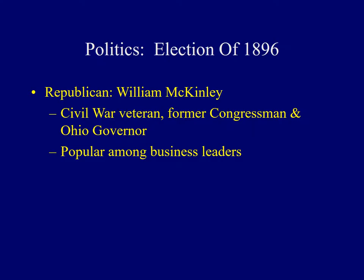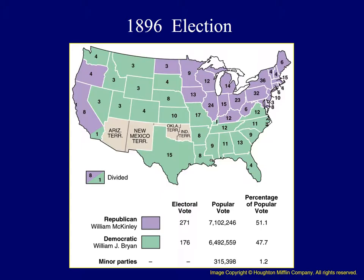The Republican nominee was William McKinley — a veteran of the Civil War, a former congressman, and a two-term governor of Ohio. In opposition to Bryan's stance of free silver, he wanted the United States to maintain its support of the gold standard. In general, McKinley had the support of the business community, as they feared what might happen if Bryan's policies were adopted. They also agreed with McKinley's goal to maintain high tariffs to protect American manufacturers.